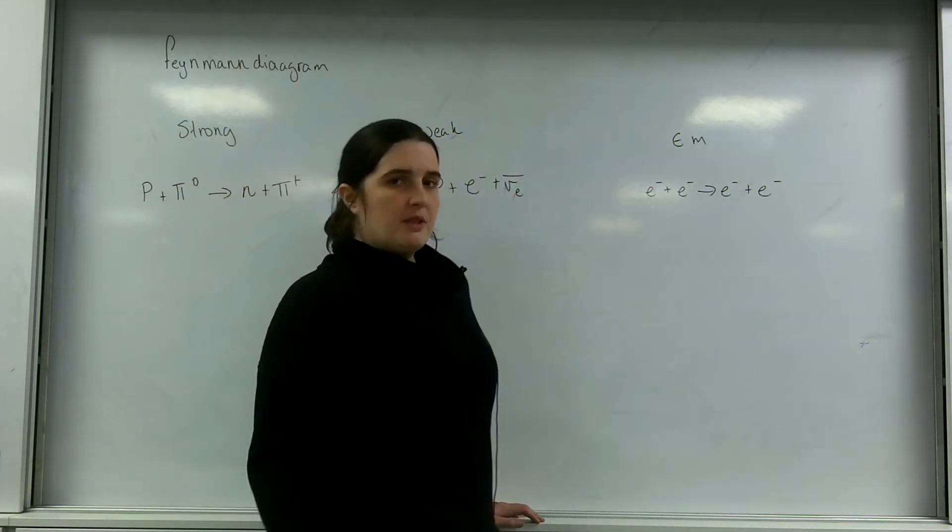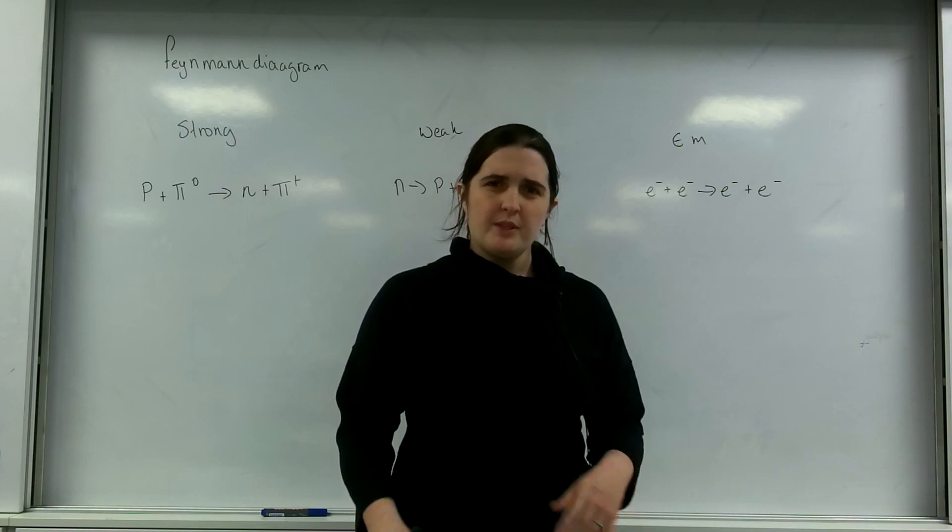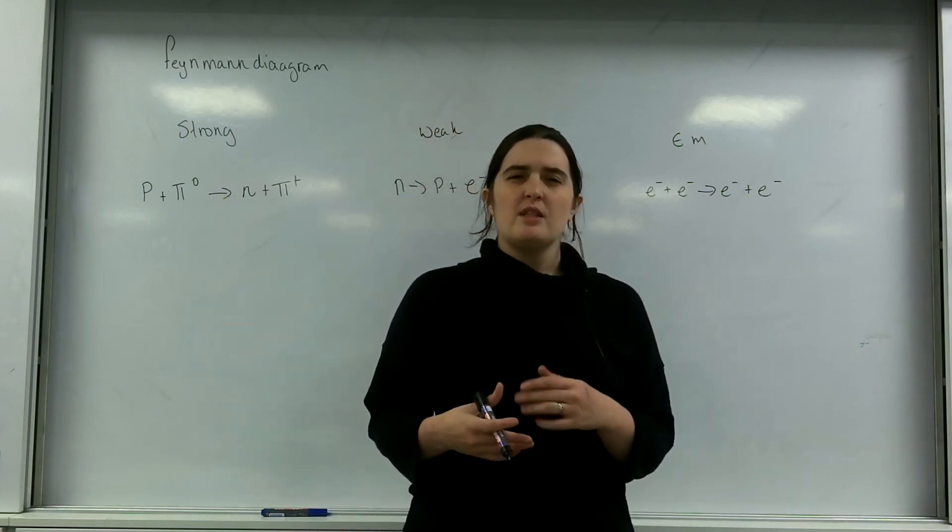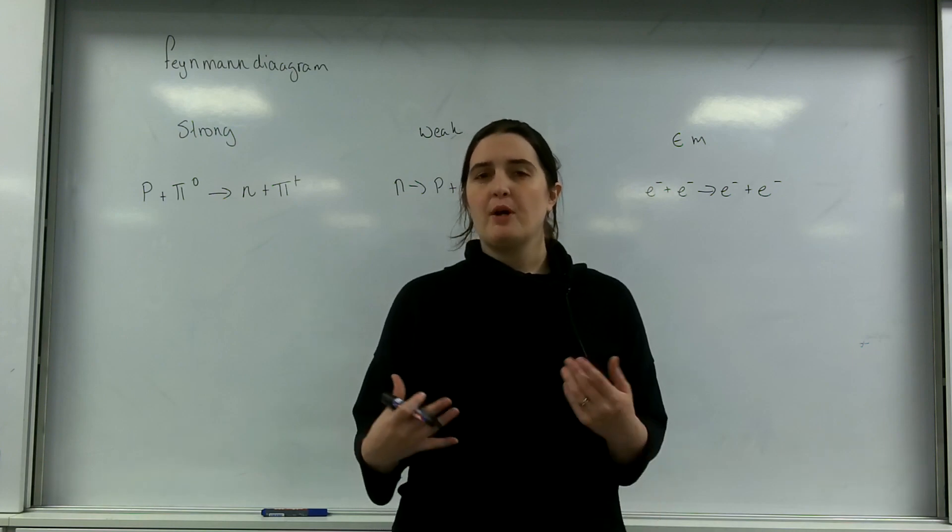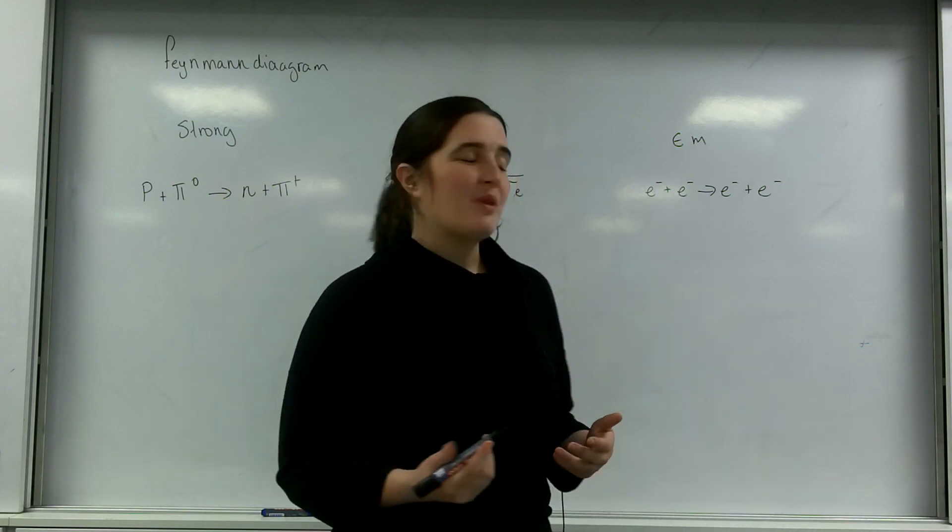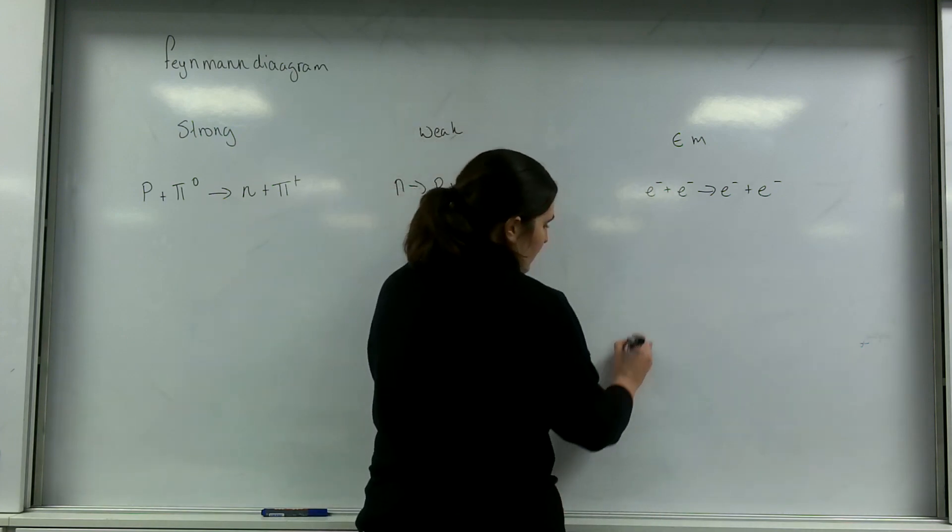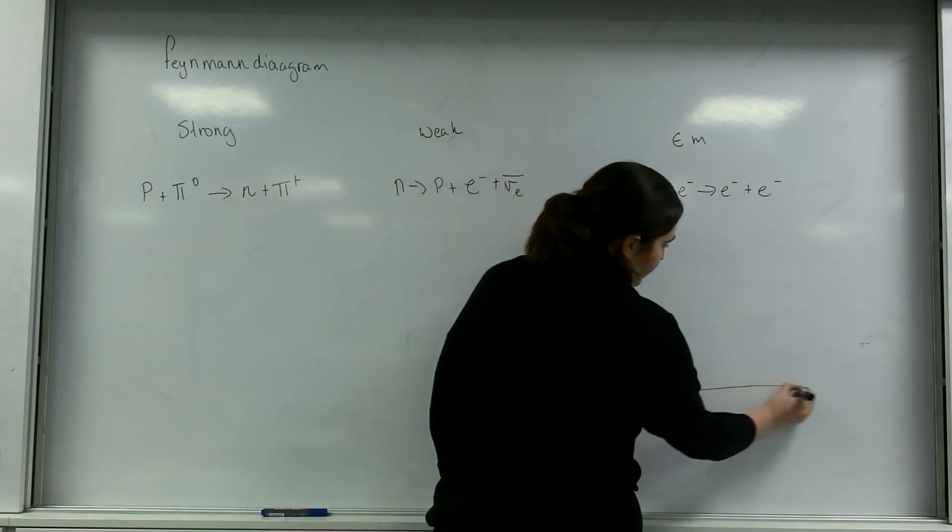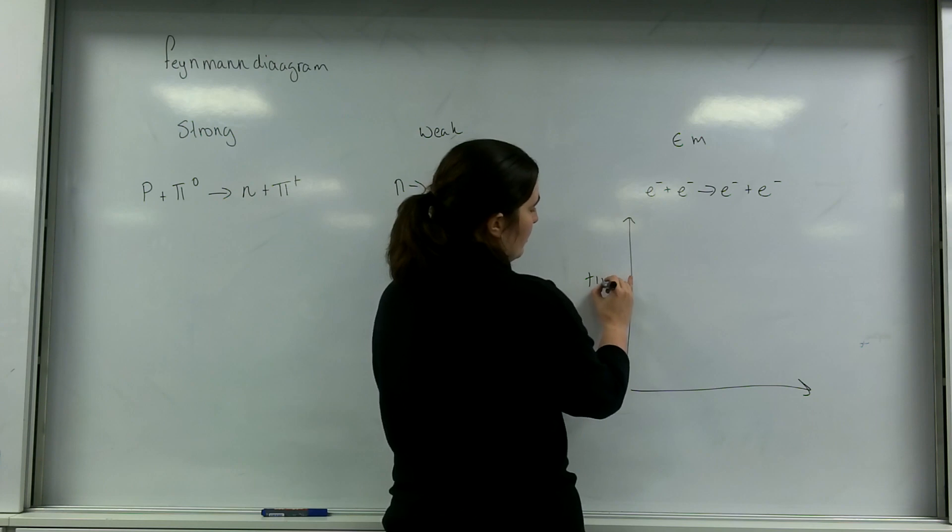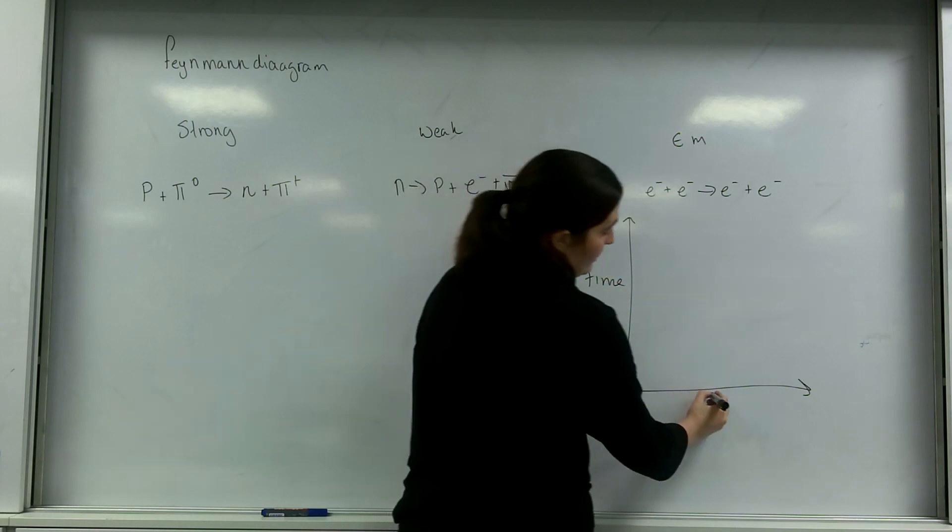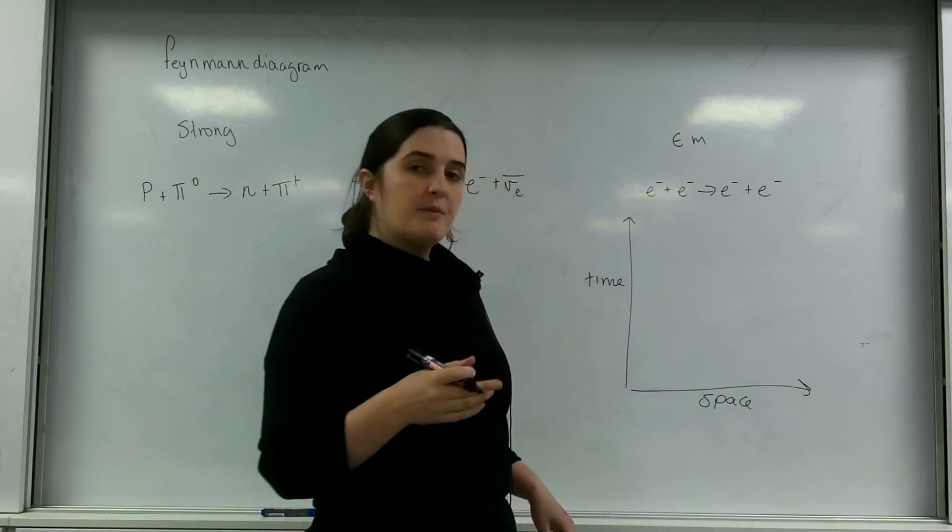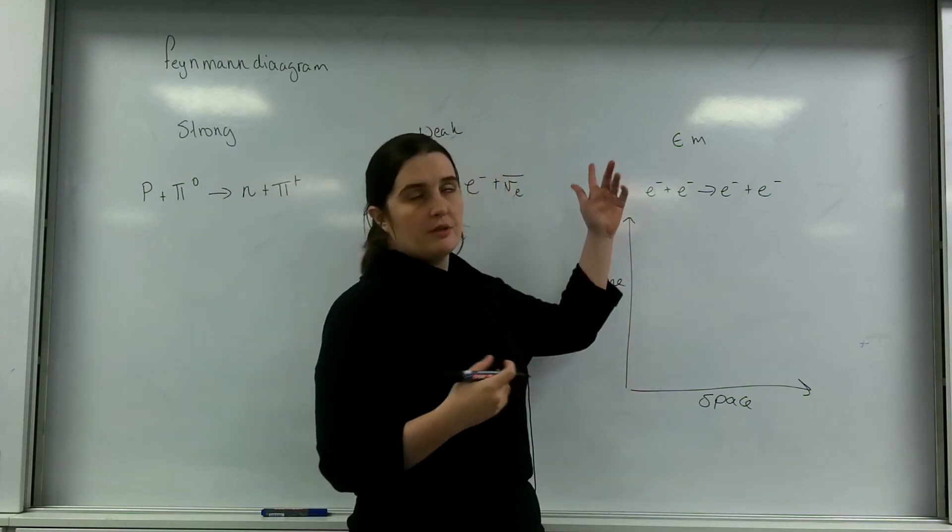A Feynman diagram is a diagram to represent interactions between particles, and more importantly it shows things like the exchange particle and the passage of time. A Feynman diagram has two axes: time on the y and space on the x, so time flows from zero upward.